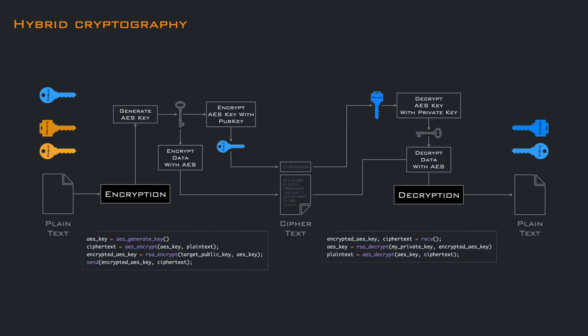Now that we have everything, we can stitch together the pieces. We generate an AES key, use that to encrypt the data using the AES algorithm, then use asymmetric encryption to encrypt the generated AES key, and send everything over the network. Only the owner of the private key can decrypt the AES key, and with that decrypt the message.